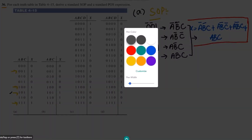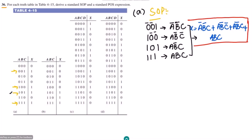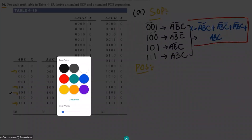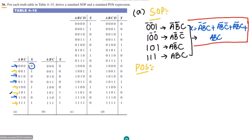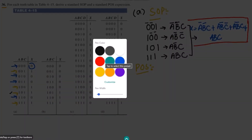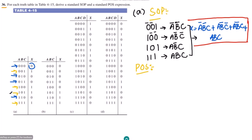In order to find the product of sum expression, let me write the product of sum. To find the product of sum, I have to identify the terms which are 0. The zero terms are this, this, this, and this because the output for them is 0. In writing them, I will basically write them as A plus B plus C.